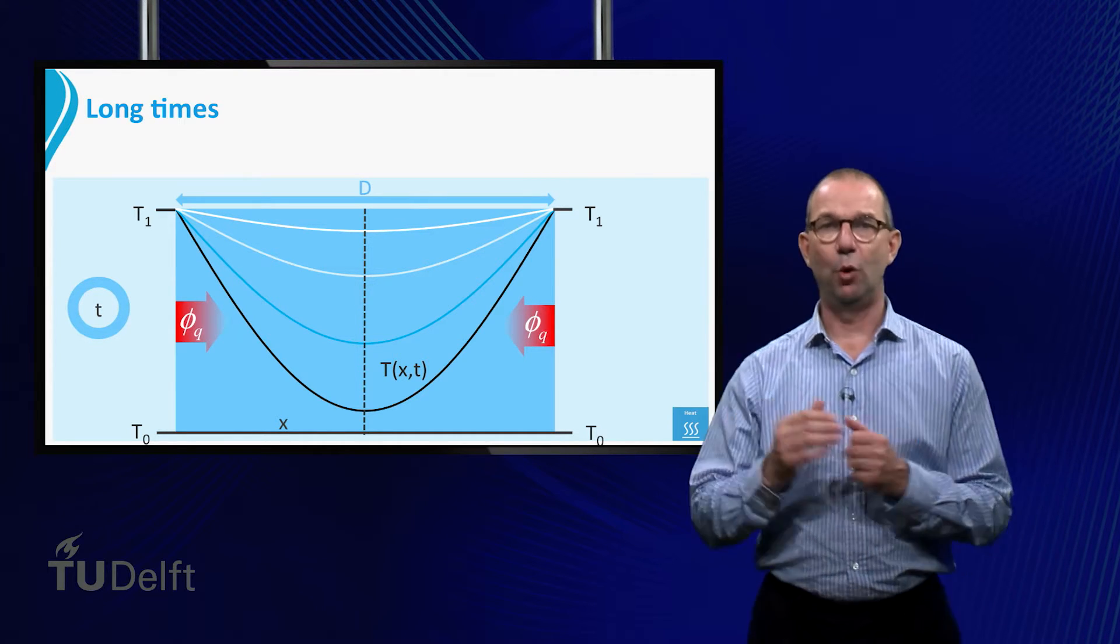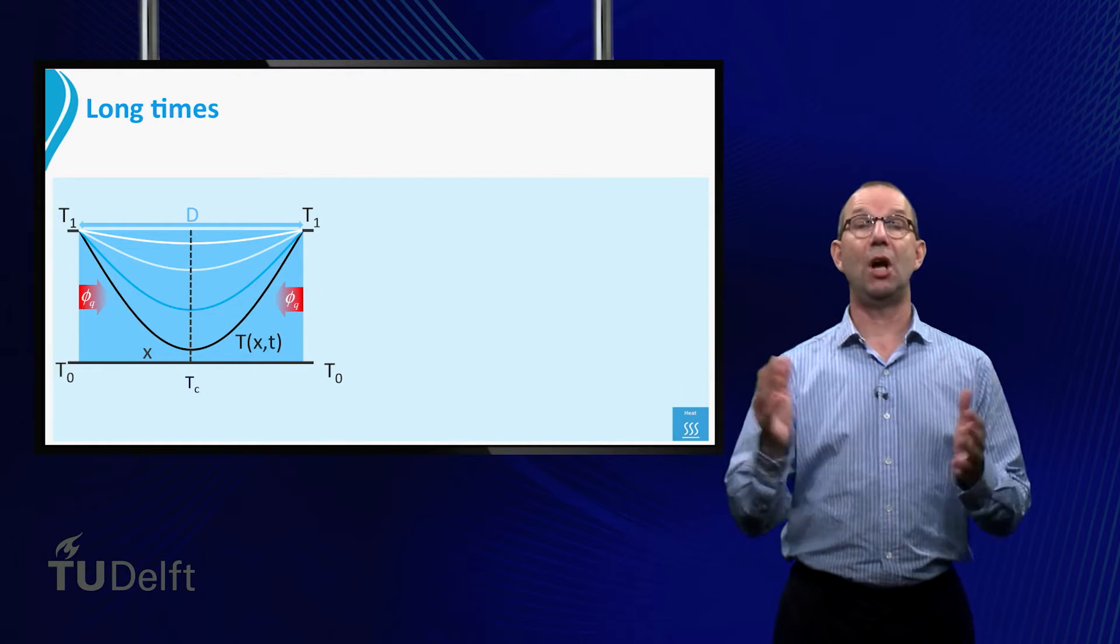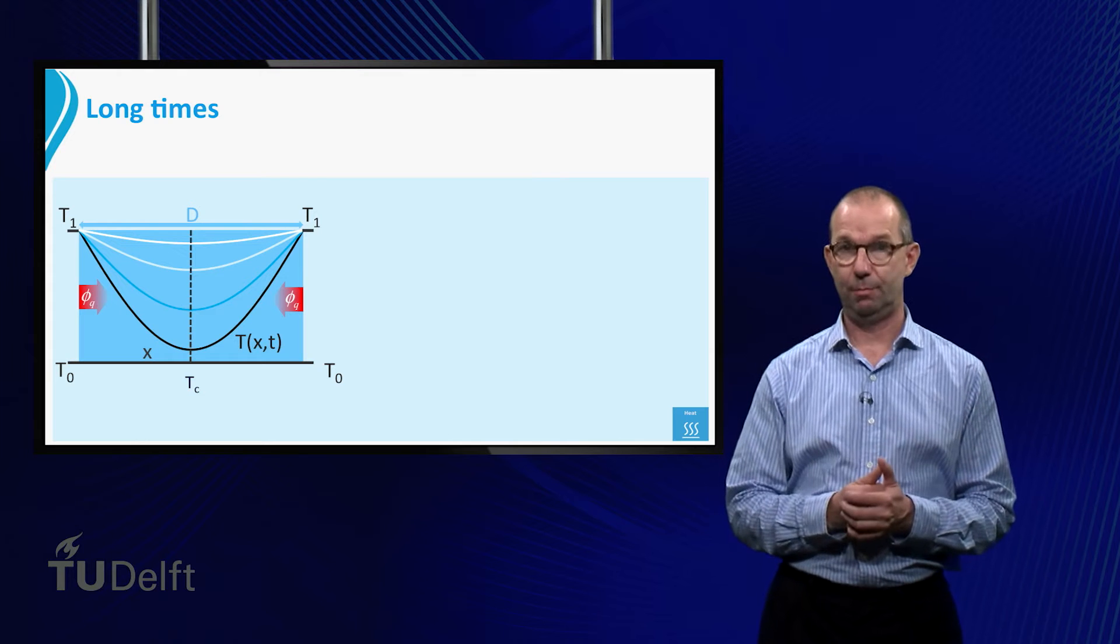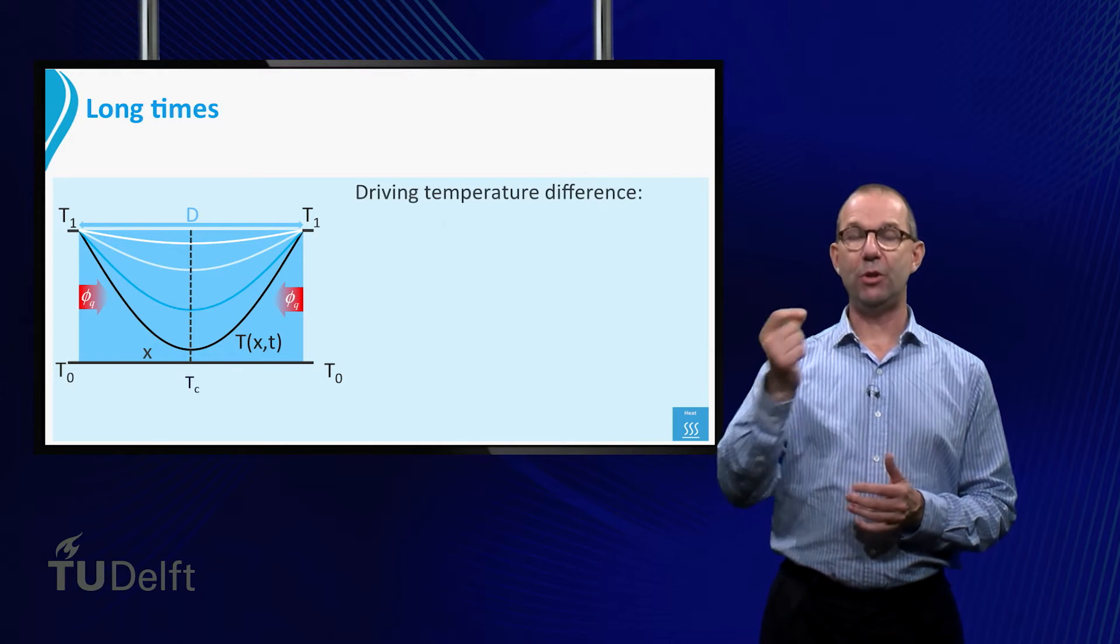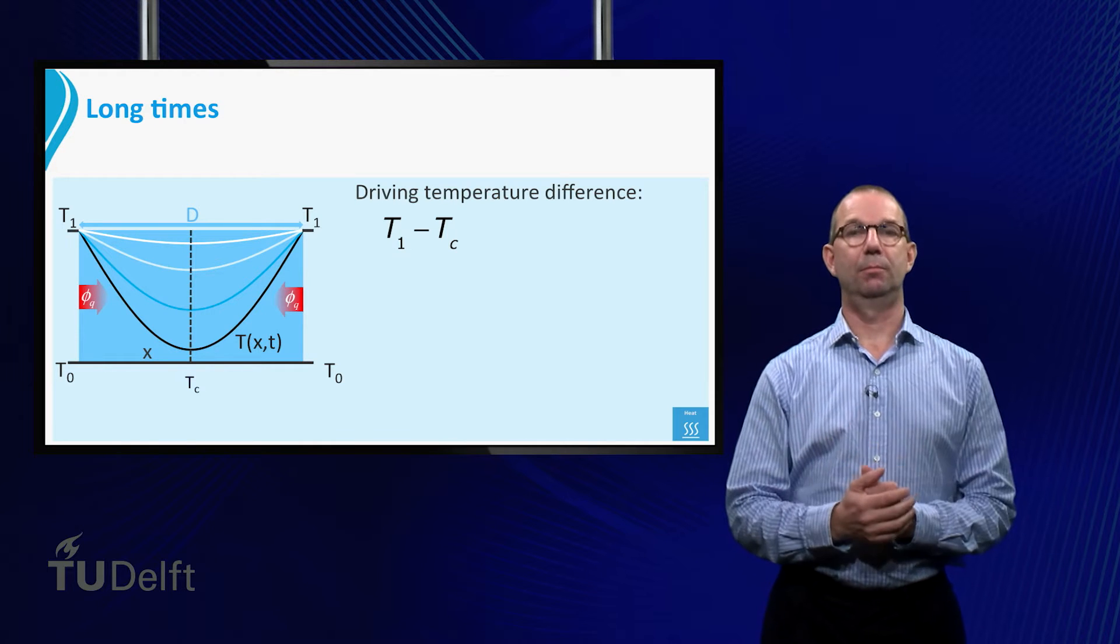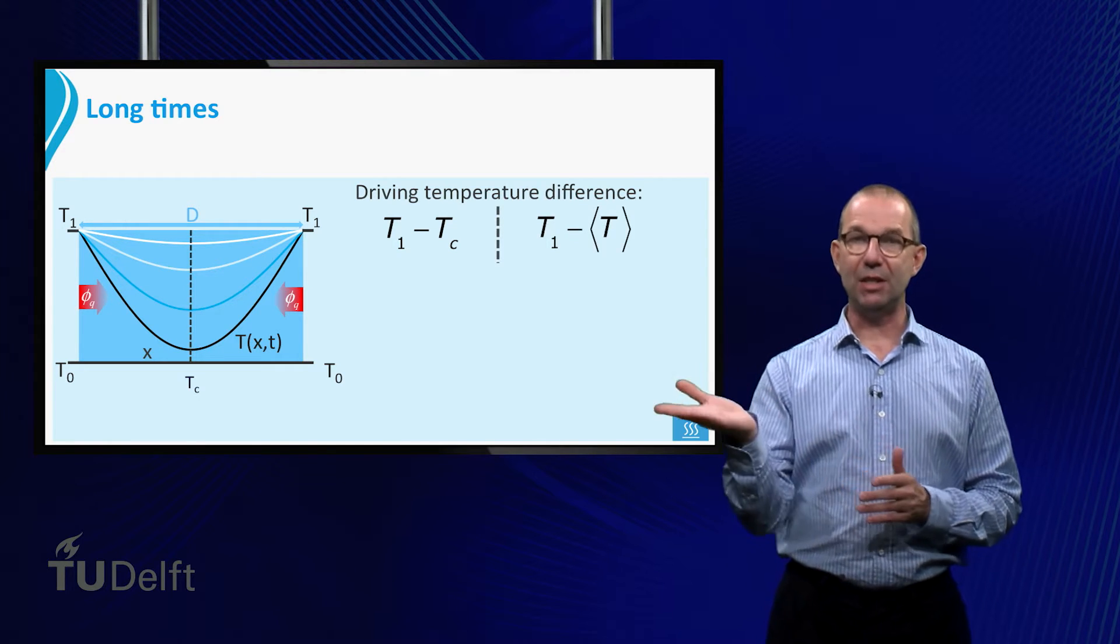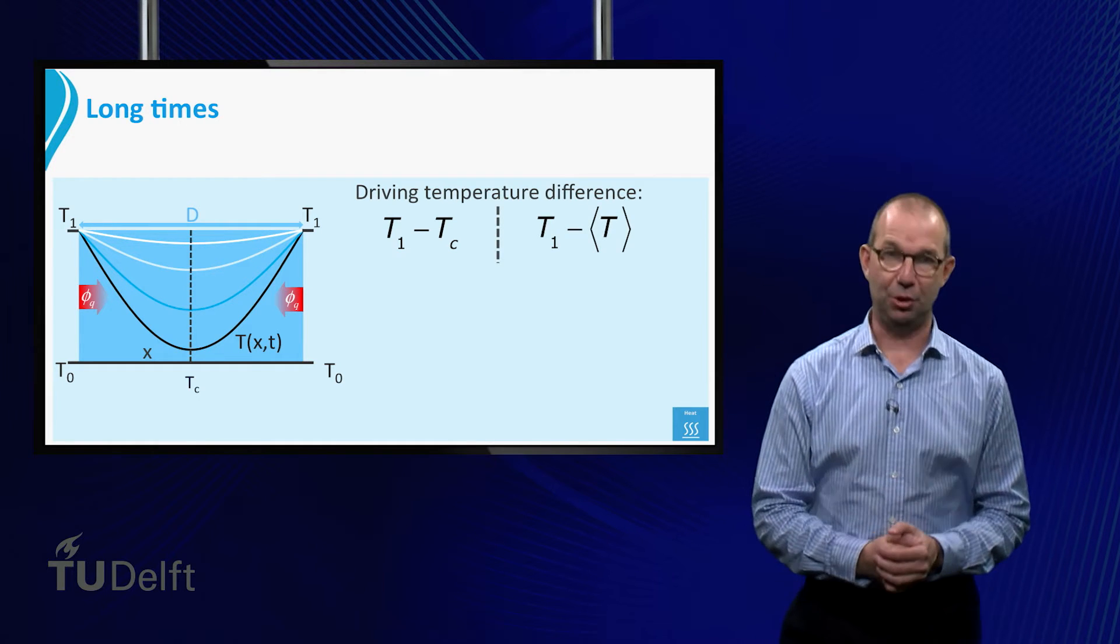Now that the driving force is no longer T1 minus T0, we need to decide what is our driving force. One obvious choice could be T1 minus T center. That is a good choice. But in practice also T1 minus the average temperature of the plate is used. That is especially handy when we need to find the change of the mean temperature itself.